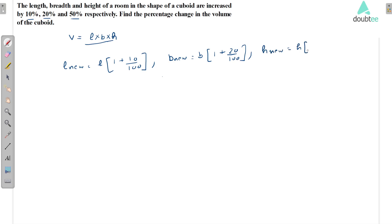In the same way, height will be increased by 50%, so the new height is equal to h times (1 plus 50/100). So the new volume of cuboid is: